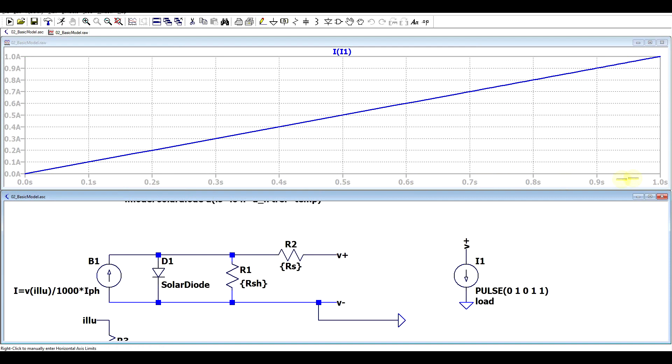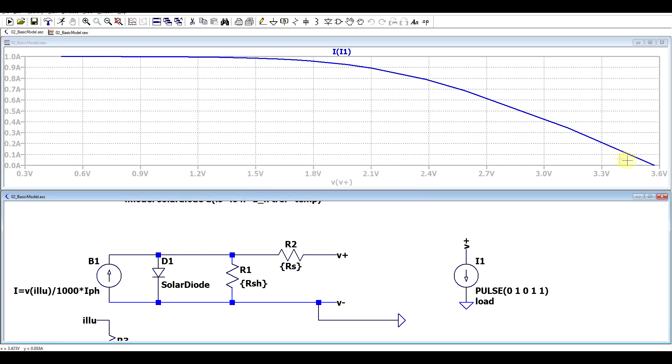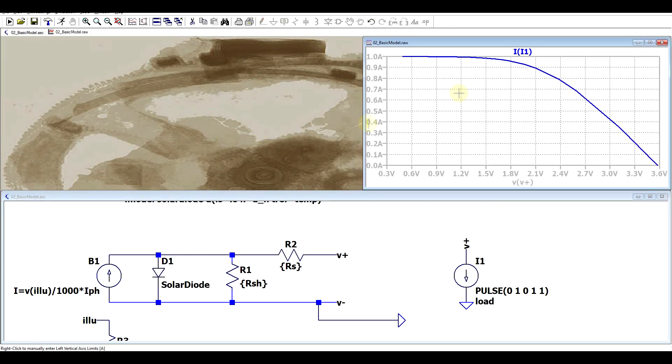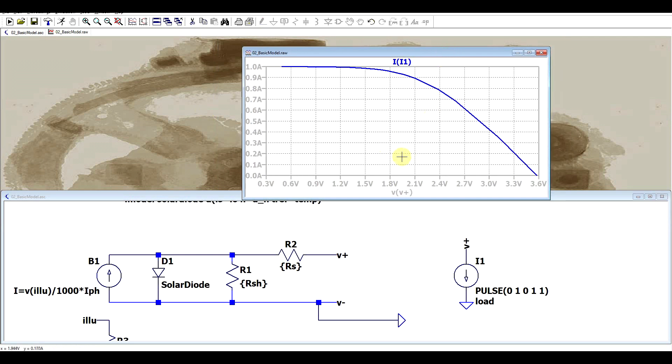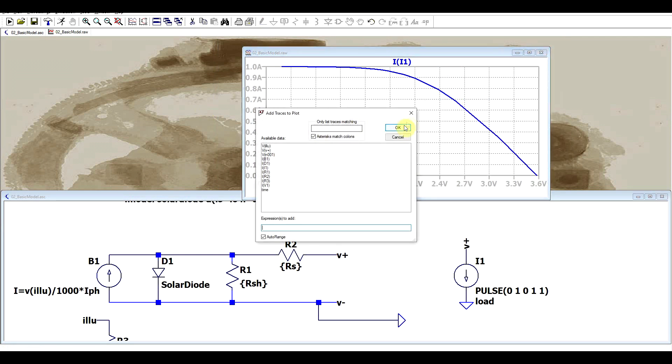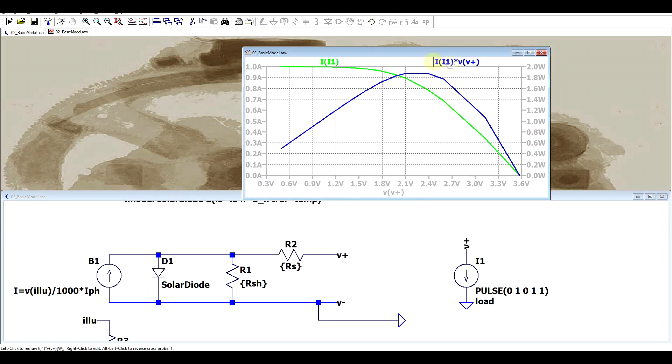So if we run the simulation we can look at the current running through the load and rather than expressing it based on time we can express it based on the voltage in the V plus net, so the output voltage. We get a nice curve quite characteristic to how solar panels normally work. We can of course add another trace that multiplies our current times the output voltage to also get the power graph so we can determine the exact maximum power point. So the model seems to work.